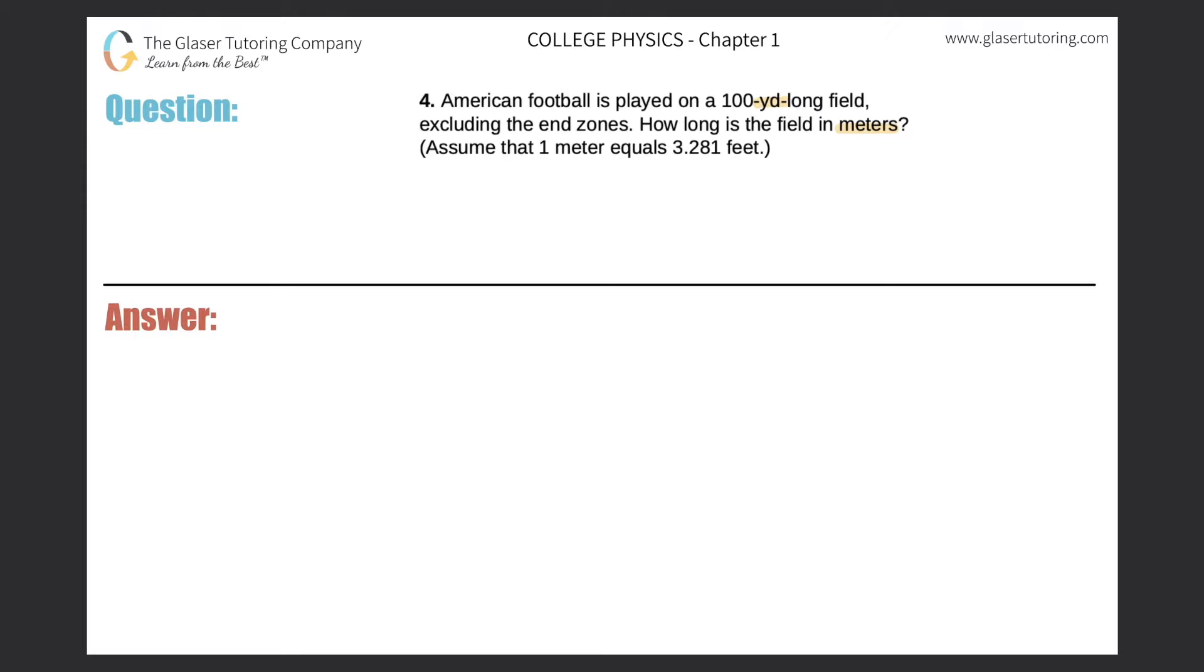All right, so let's first start by writing down what we have or what we know. We know that we are starting with 100 yards, and somehow we have to convert that into meters. Now, this would be a simple process if we were to know a direct conversion, but unfortunately, we don't. So they do tell us a conversion, and they give us the conversion that one meter is equal to 3.281 feet.